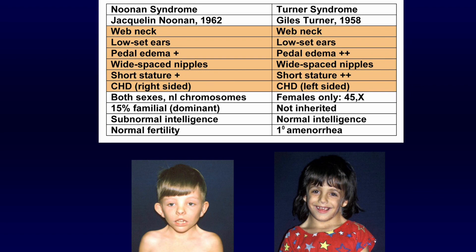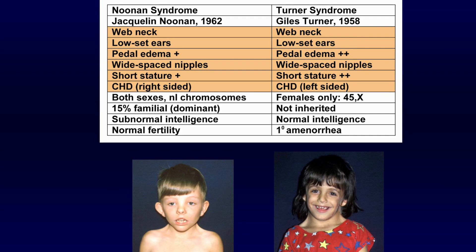Now let's see the differences between both of them. In Noonan syndrome you will see a normal chromosome number on karyotyping, because the defect is at the gene level. But in Turner syndrome you will see a missing X chromosome on karyotyping.